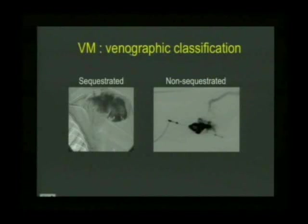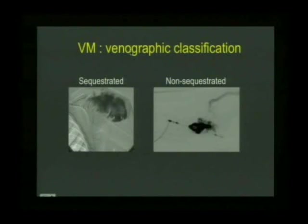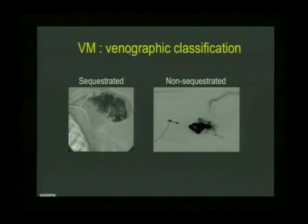Venographically, there are two types: sequestrated or non-sequestrated. Sequestrated means when you inject them, they do not connect with draining functional veins. Non-sequestrated means when you inject the venous malformation, they do connect with draining veins.